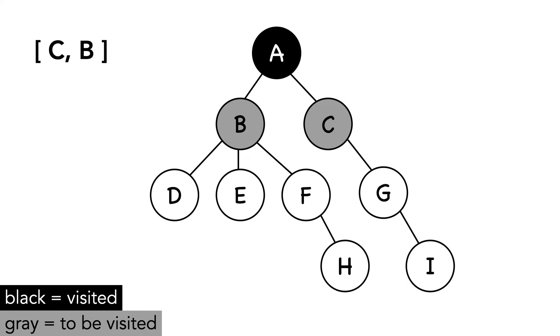B is the next node out of the queue. We mark it as visited and add its adjacent nodes into the queue.